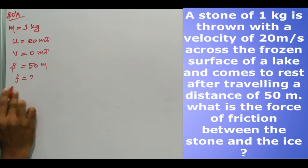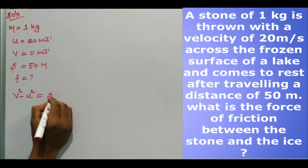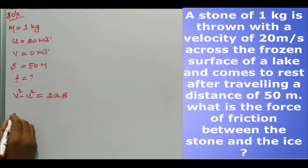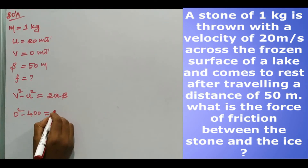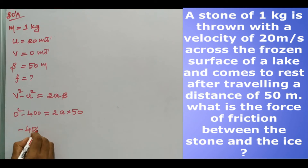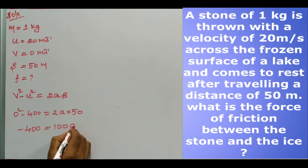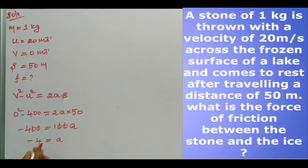Based on this information we can use v squared minus u squared equals 2as. So v squared is zero: zero squared minus 400 equals 2 into a into 50. So minus 400 equals 100a, therefore acceleration is minus 4 meter per second squared.